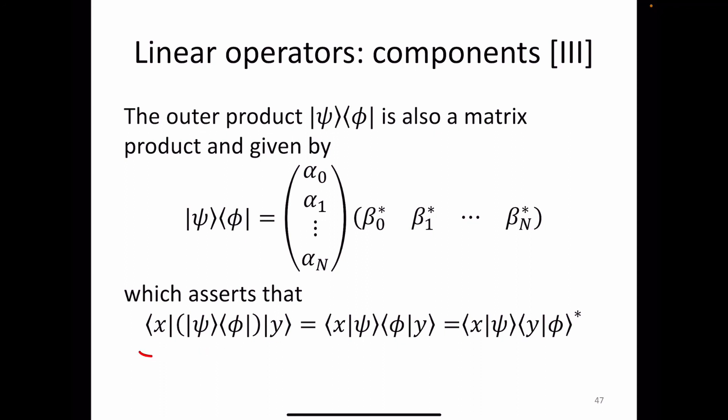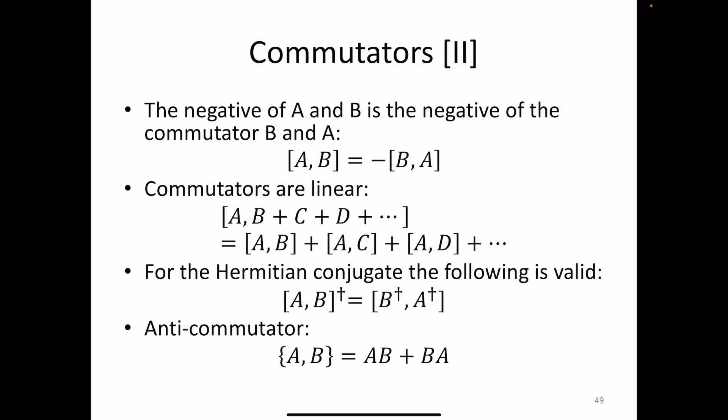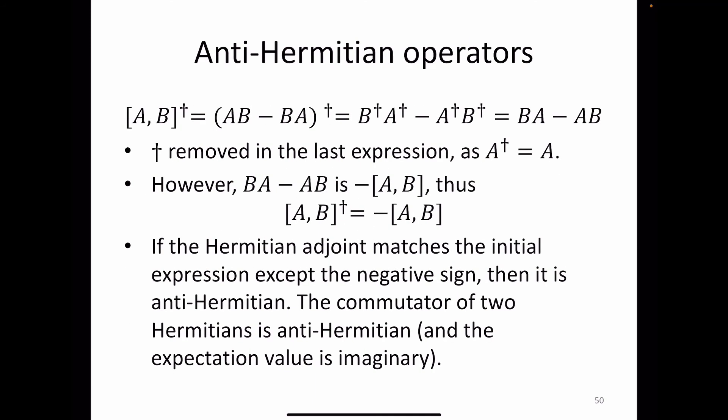The outer product is a matrix product. Commutators are very important to check when switching the sequence of operators: if A*B is not equal to B*A, the difference A*B minus B*A is called the commutator. Two operators commute if their commutator equals zero — in that case, the order of application doesn't matter. Every operator commutes with itself. There are additional properties related to anti-Hermitian operators worth reviewing.